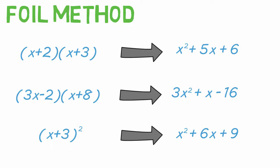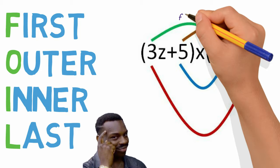FOIL stands for First, Outer, Inner, Last. But you probably already knew that. You use it to multiply each term in one expression by each term in the other expression. Let's work through a few examples.